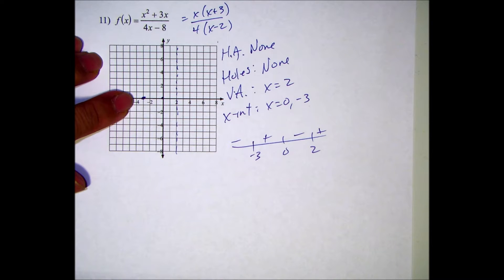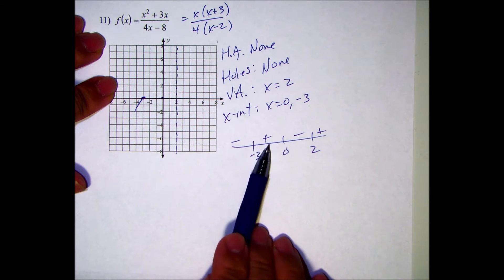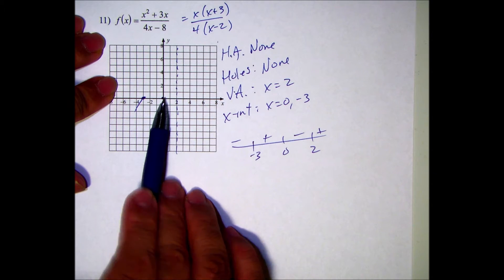x equals negative 3 is a zero and it's negative down there, so it's got to be below, left of that. Then it's positive between negative 3 and 0, but it comes back to zero, so just estimate.